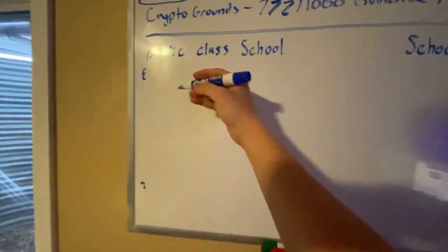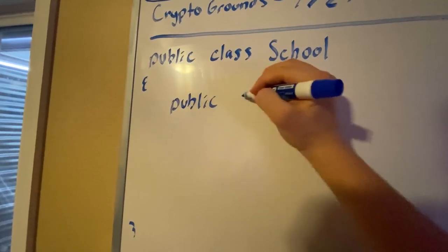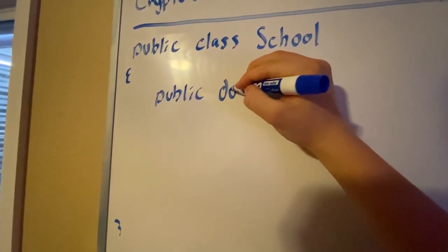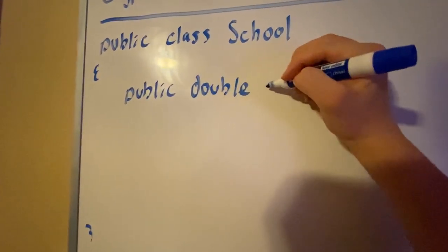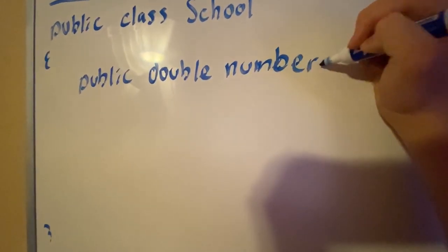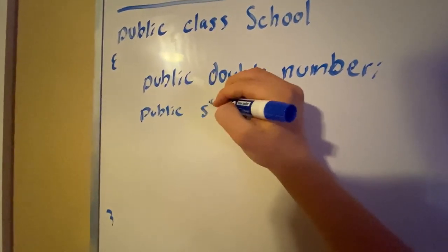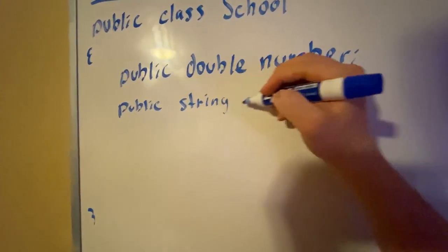This is where you can have your variables and fields, such as public double number, or you can have public string name.